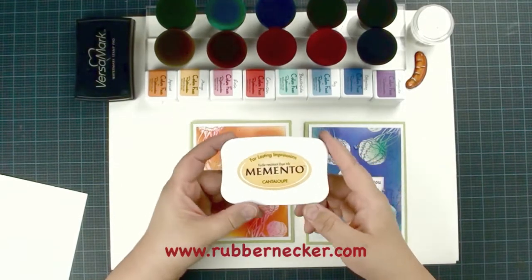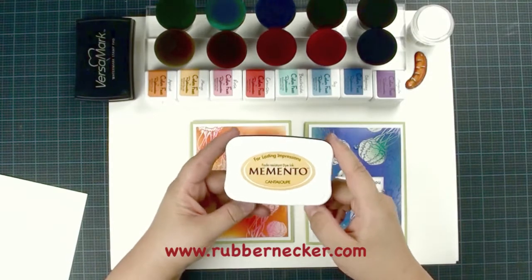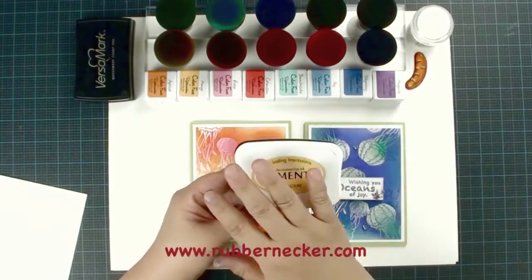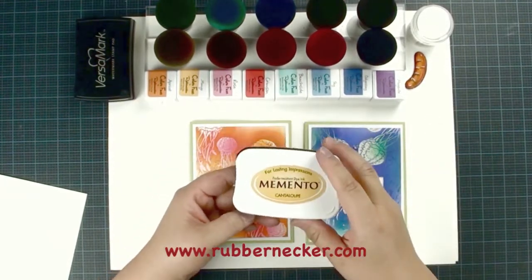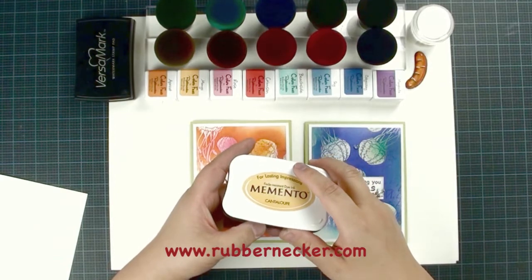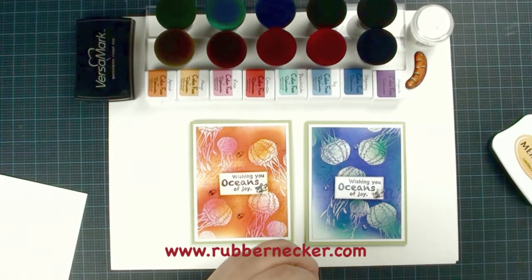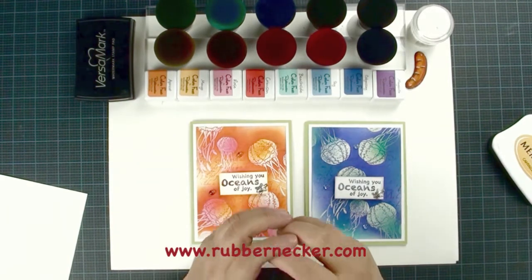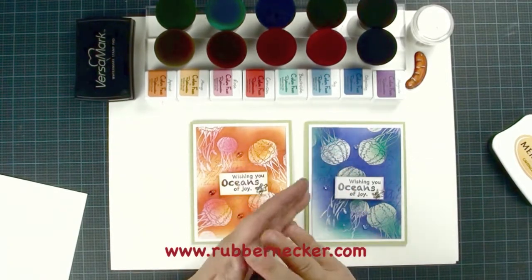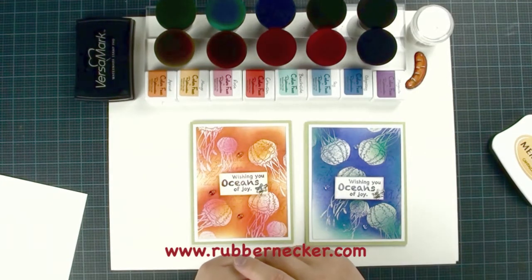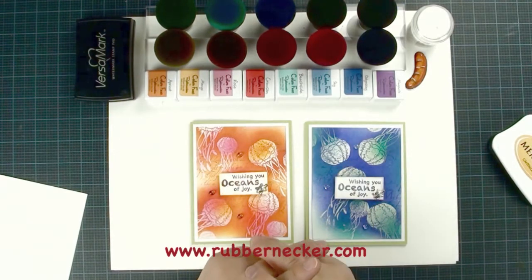I switched from Marvy ink pads to Memento ink pads a while ago. If you don't want to invest a lot of money for ink pads because the full size is $5.99 each, all 48 colors would cost $200-$300. Rubber Necker came out with 48 brand new colors called ColorFuse. They're half the size of full size ink pads at a lower price. Check out rubbernecker.com for their ColorFuse ink pads.